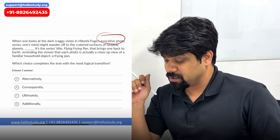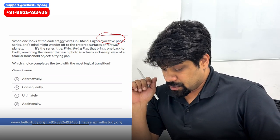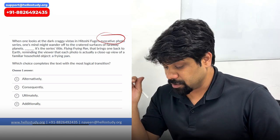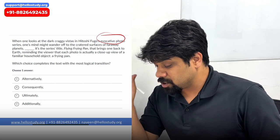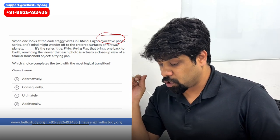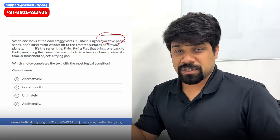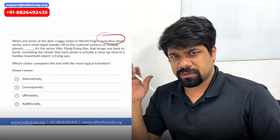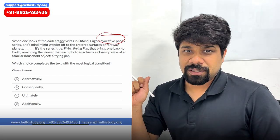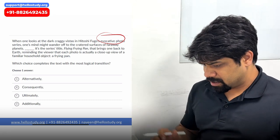The second part — blank — it's the series title 'Frying Pan' that brings one back to earth, reminding the viewer that each photo is actually a close-up view of a familiar household object — a frying pan. So these pictures are not of far-off planets; these are of objects that are there on earth.